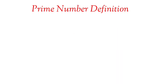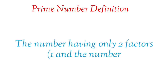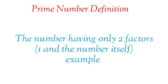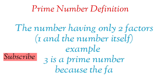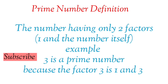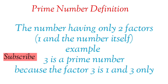Prime Number Definition: The numbers having only two factors — one and the number itself. Example: 3 is a prime number because the factors of 3 are 1 and 3 only.